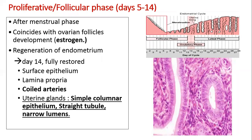After the menstrual phase, the proliferative phase coincides with the ovarian follicular phase — days 5 to 14 — where there is formation of layers. By day 14, regeneration of the endometrium is complete: surface epithelium is formed, lamina propria, coiled arteries, and uterine glands lined by simple columnar epithelium that are relatively straight with a narrow lumen. This phase is under the effect of estrogen from the ovarian follicles.